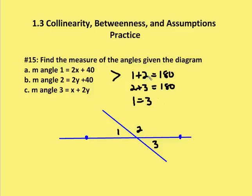So I know that angle 1 plus angle 2 is going to be equal to 180 degrees. I can also assume that this second line here is a straight line, so I can say that angle 2 plus angle 3 is equal to 180 degrees. Now, if angle 1 plus 2 equals 180 degrees and angle 3 plus 2 equals 180 degrees, then angle 1 is also equal to angle 3.